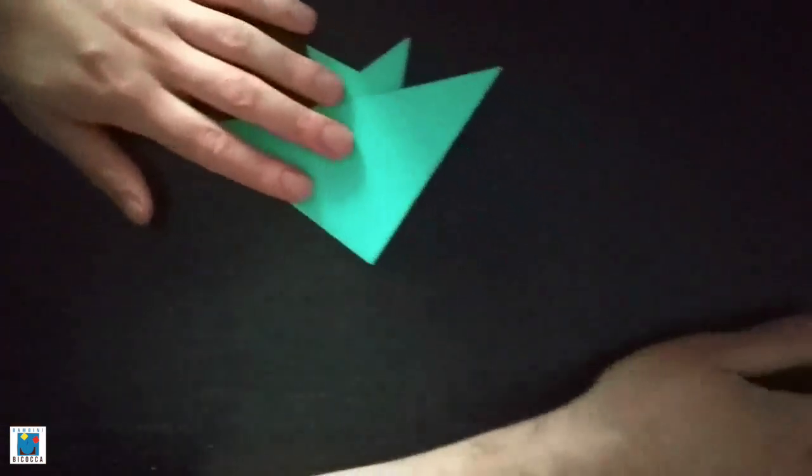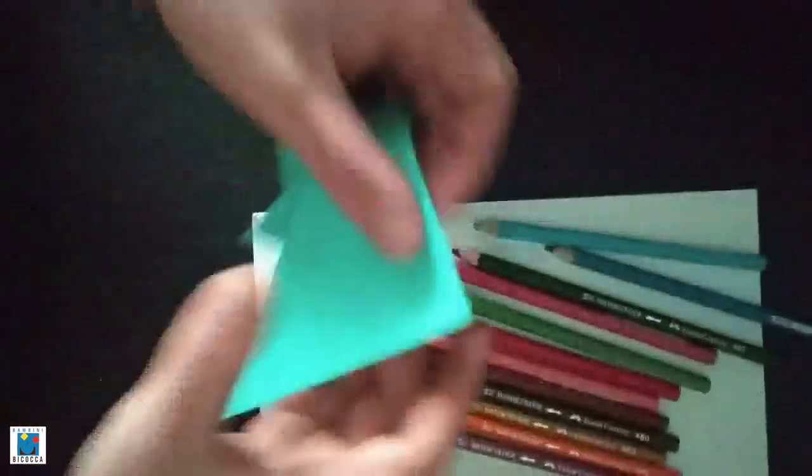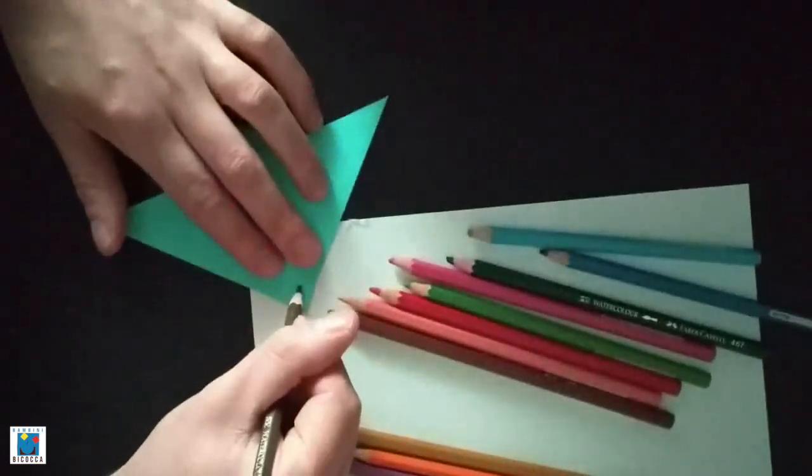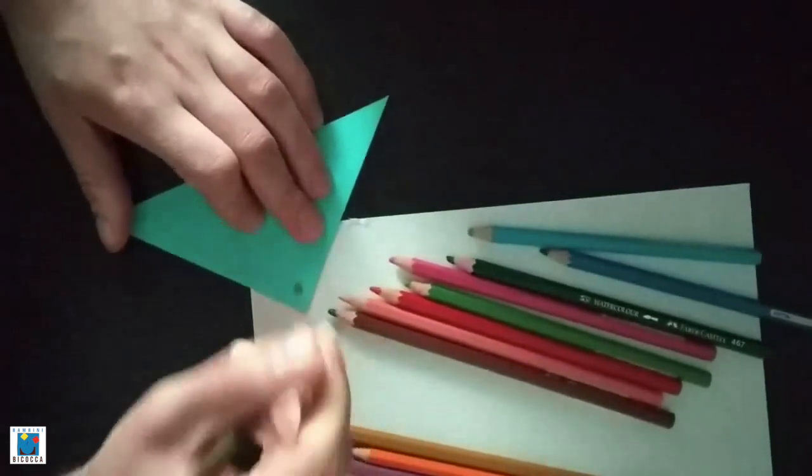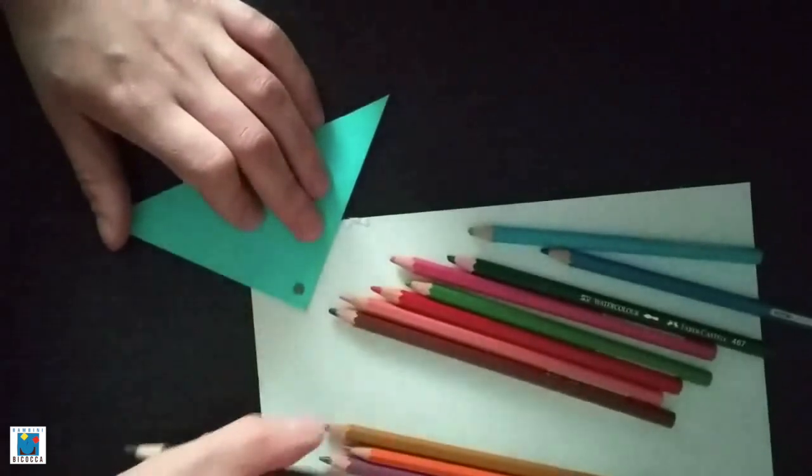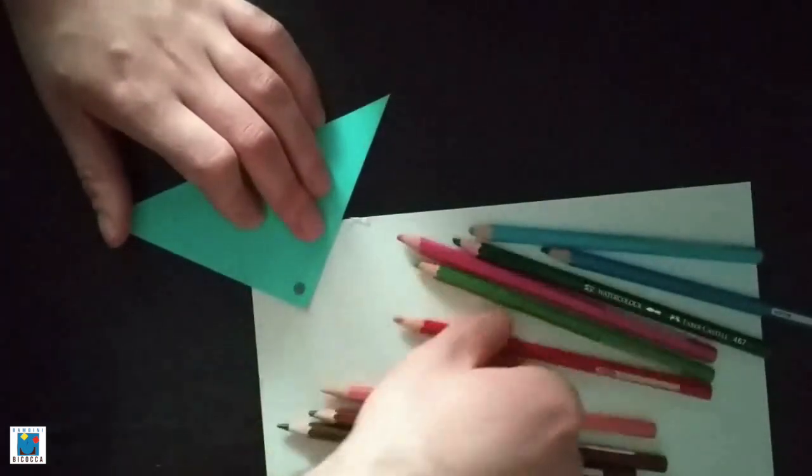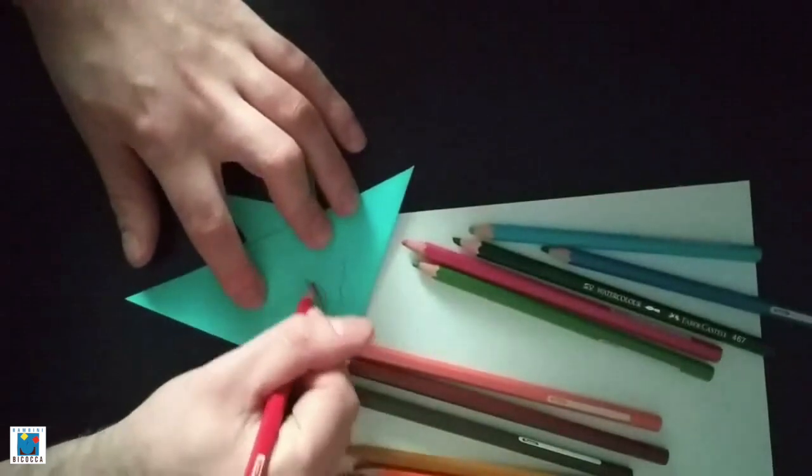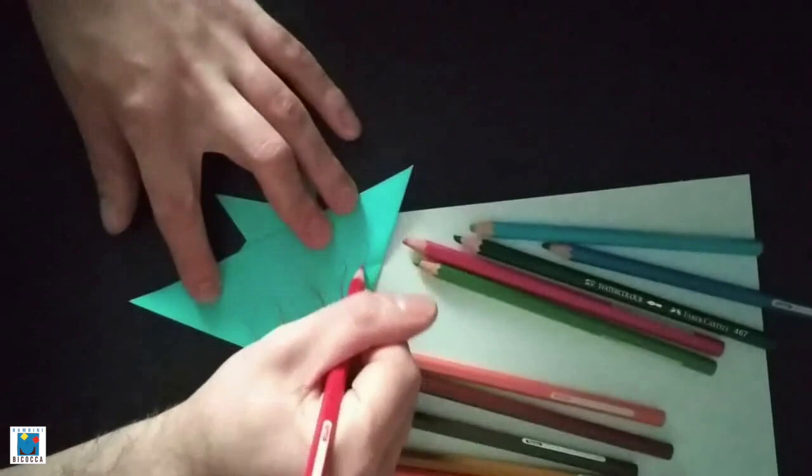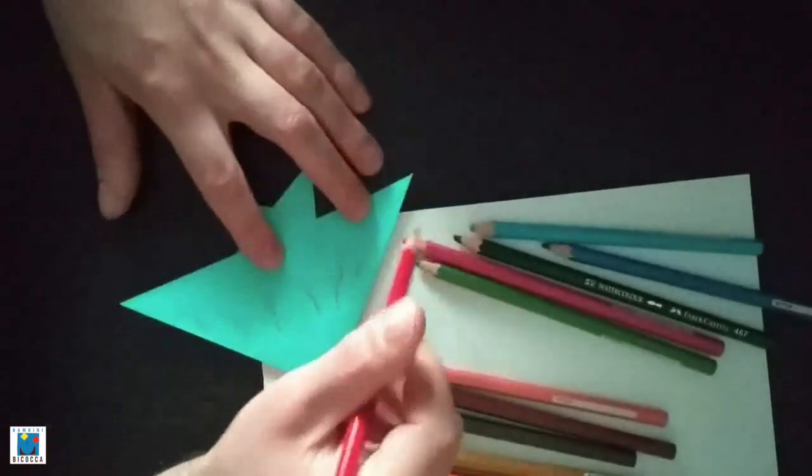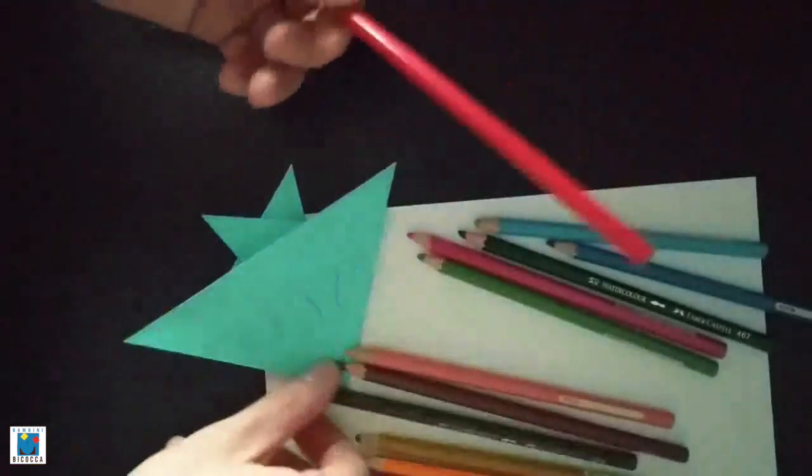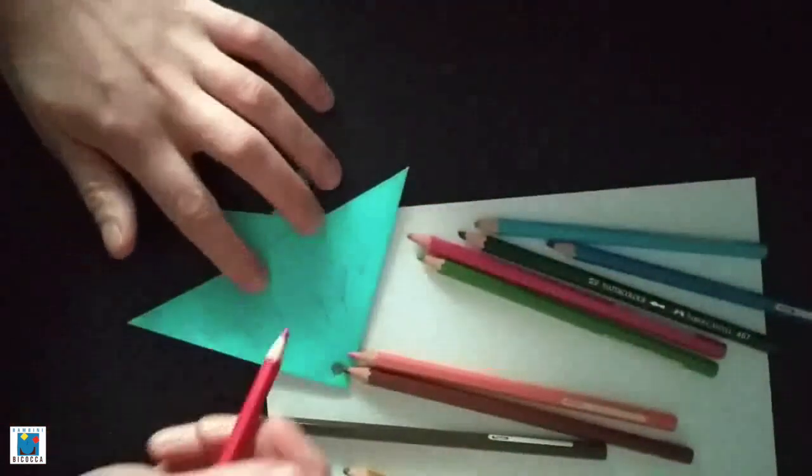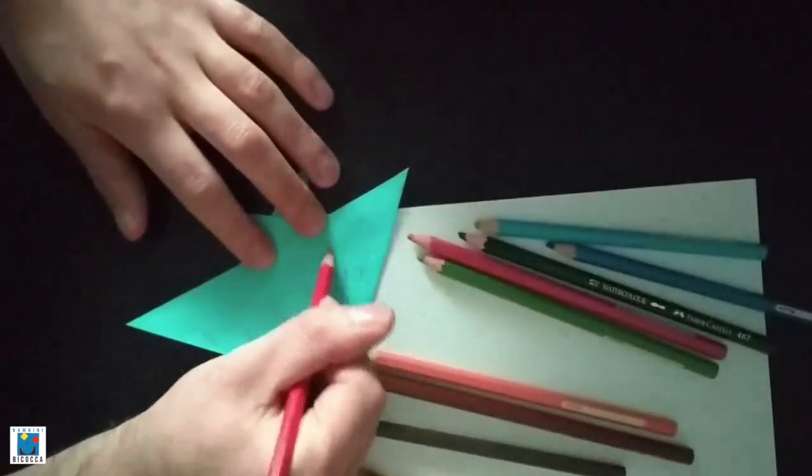We can take our pencils and our paper now and we can draw on our fish. We can draw an eye so he can see where he's going. And we can give him some decorations so he can be beautiful. You can make it as colorful as you want. I'm only using two colors, like the brown and the yellow. The brown for the eye and the red for the decoration. But you can use as many colors as you want.